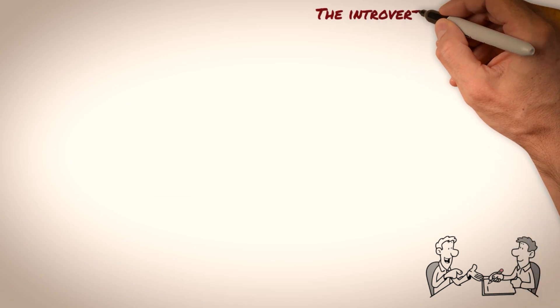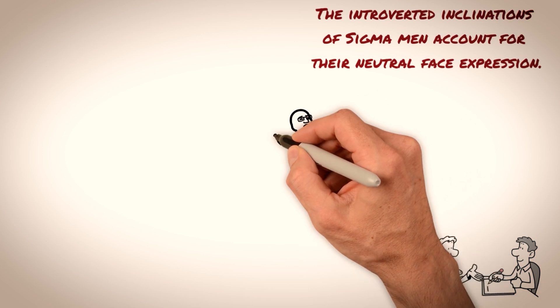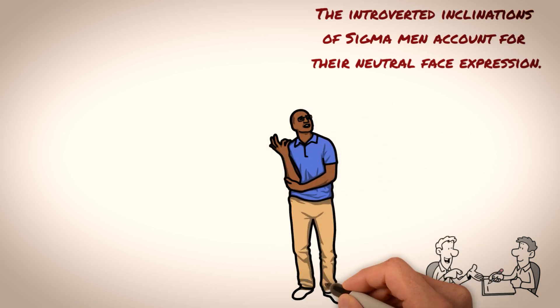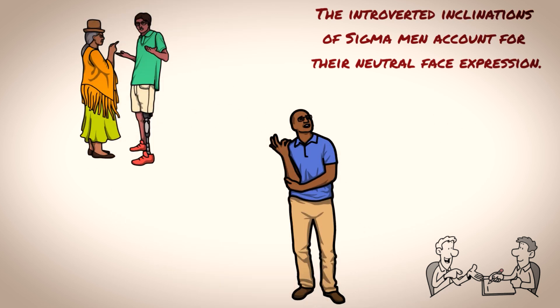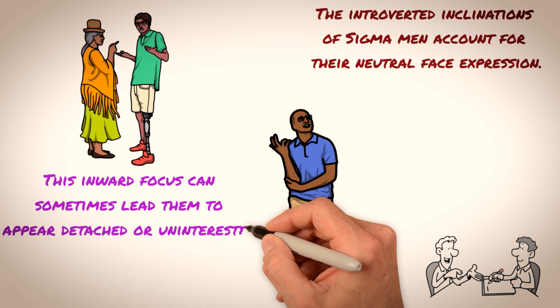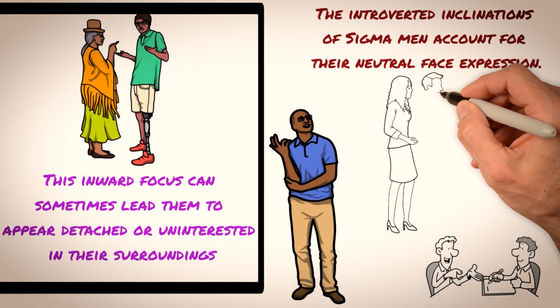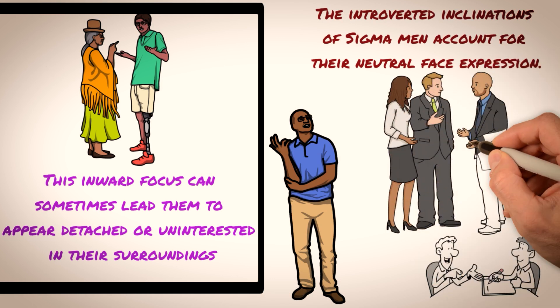The neutral facial expression of Sigma males can be attributed to their introverted tendencies. They tend to be deep thinkers and prefer to process their thoughts internally rather than vocalize them. This inward focus can sometimes lead them to appear detached or uninterested in their surroundings, which can be misinterpreted by others. Additionally, they may find it difficult to express their emotions outwardly, which can further contribute to their neutral facial expression.